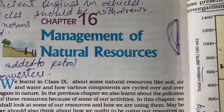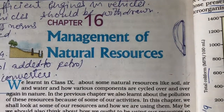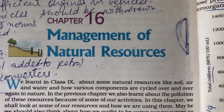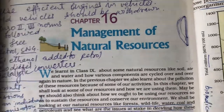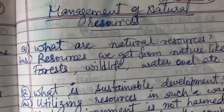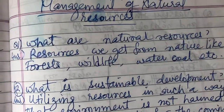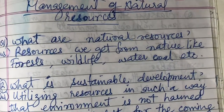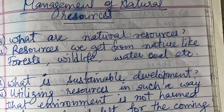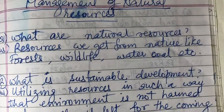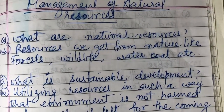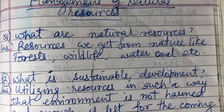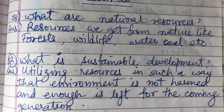Class 10th, Chapter 16: Management of Natural Resources. Let us see what natural resources are. Resources that we get from nature, like forest, wildlife, water, coal, etc., are called natural resources.